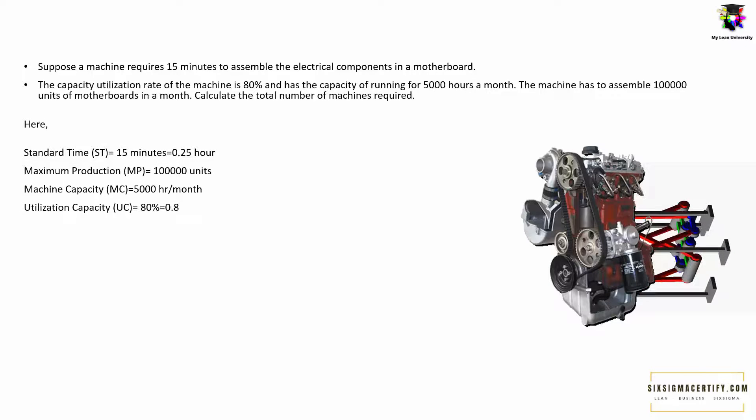So here the standard time is 15 minutes. We have to convert it in hours so that unit for machine capacity and the standard time is similar because we have machine capacity given in hours, that is 5000 hours per month. So converting 15 minutes to hours, we divide 15 minutes by 60, we get 0.25 hours.